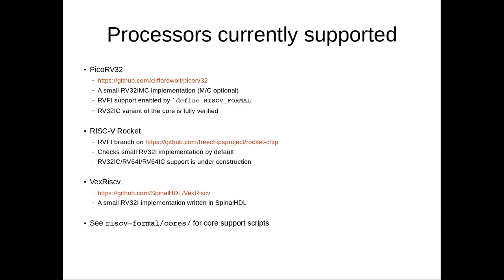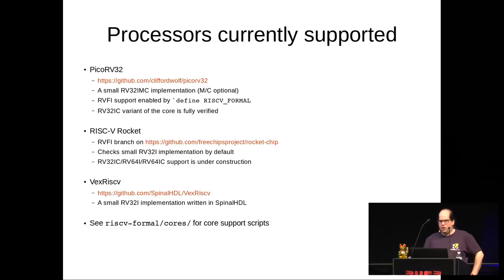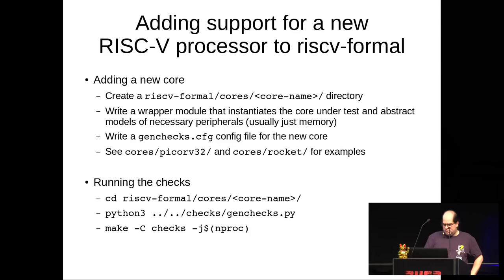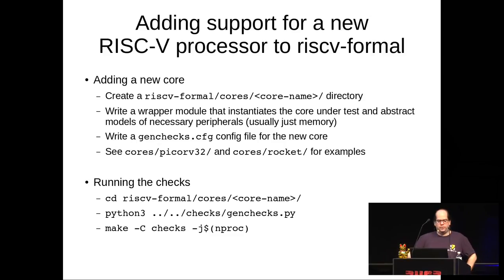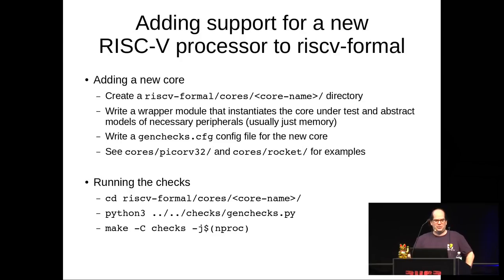Currently supported processors include PicoRV32, which is my own processor, RISC-V Rocket which is probably the most famous RISC-V implementation, and VexRISC-V. There are also a couple of others that are not part of the open source release. If you want to add support for your RISC-V processor, check out the RISC-V Formal repository, look at the cores directory, find whichever supported core most closely resembles yours, copy that directory, and make a couple of small modifications.